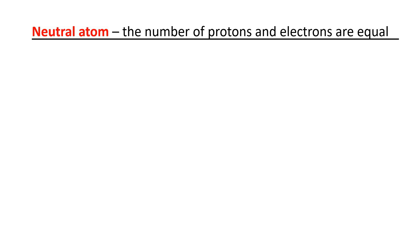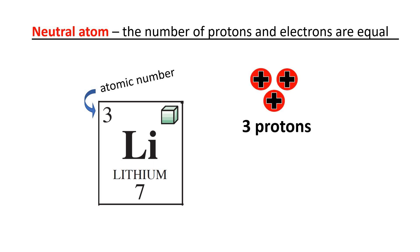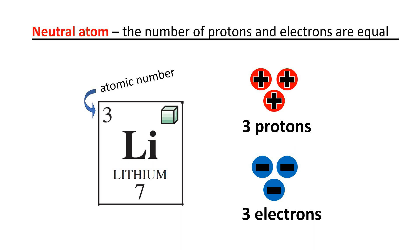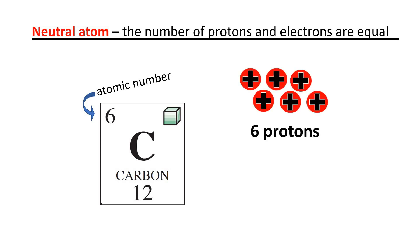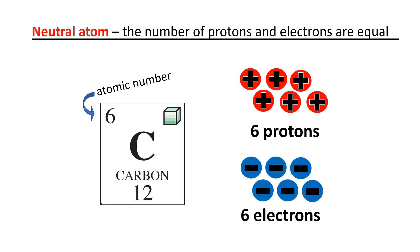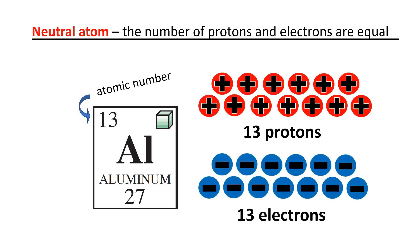Now, if an atom is said to be neutral, it means that the number of protons and electrons are equal, and the charge is equal to zero. For example, lithium has an atomic number of 3, so it has 3 protons; as a neutral atom it also has 3 electrons. Carbon, as a neutral atom, has 6 protons and 6 electrons. Aluminum, with an atomic number of 13, has 13 protons and 13 electrons as a neutral atom.